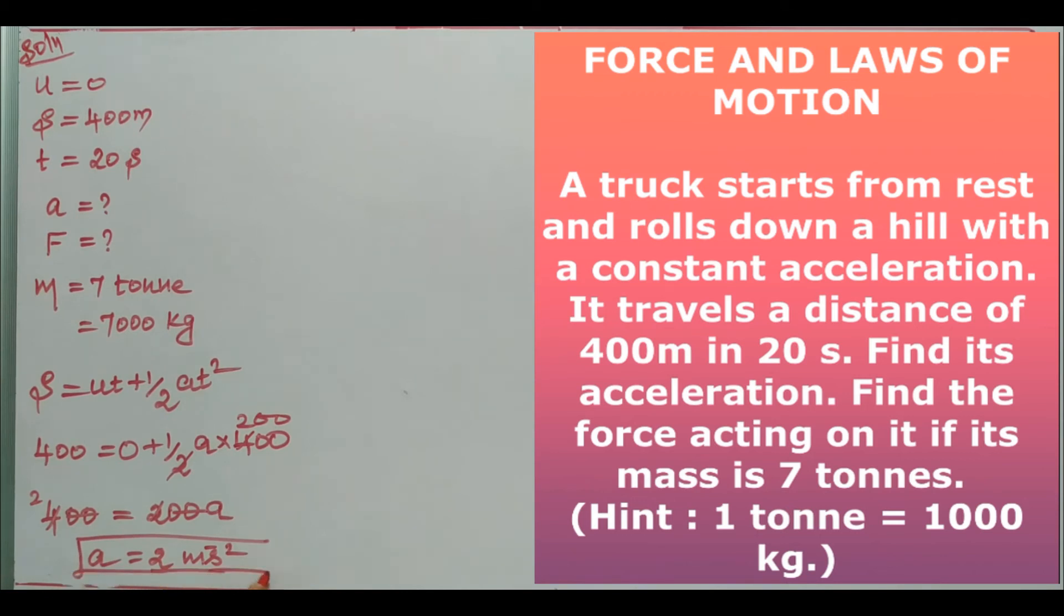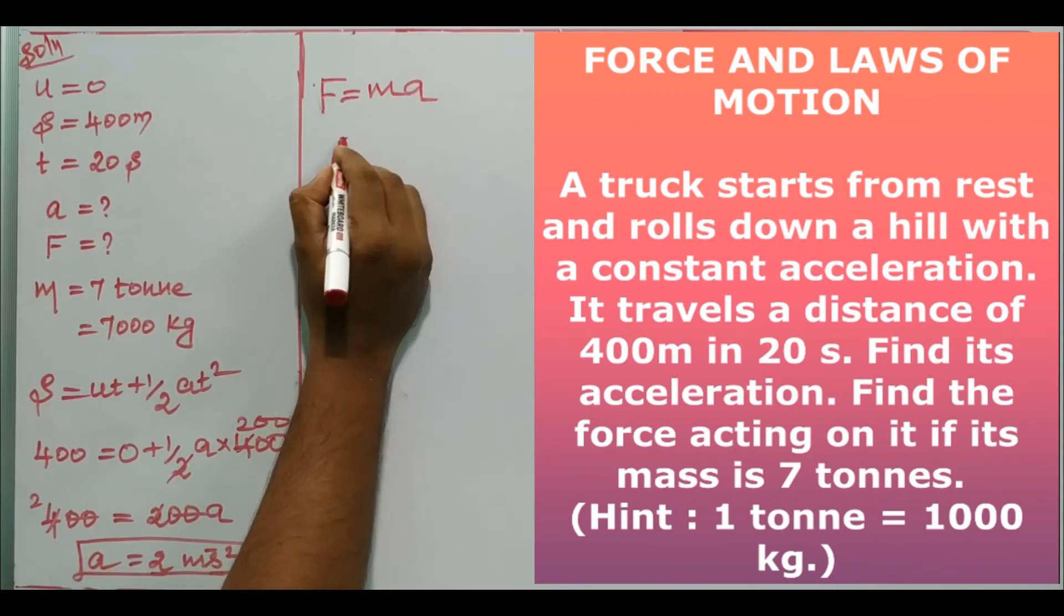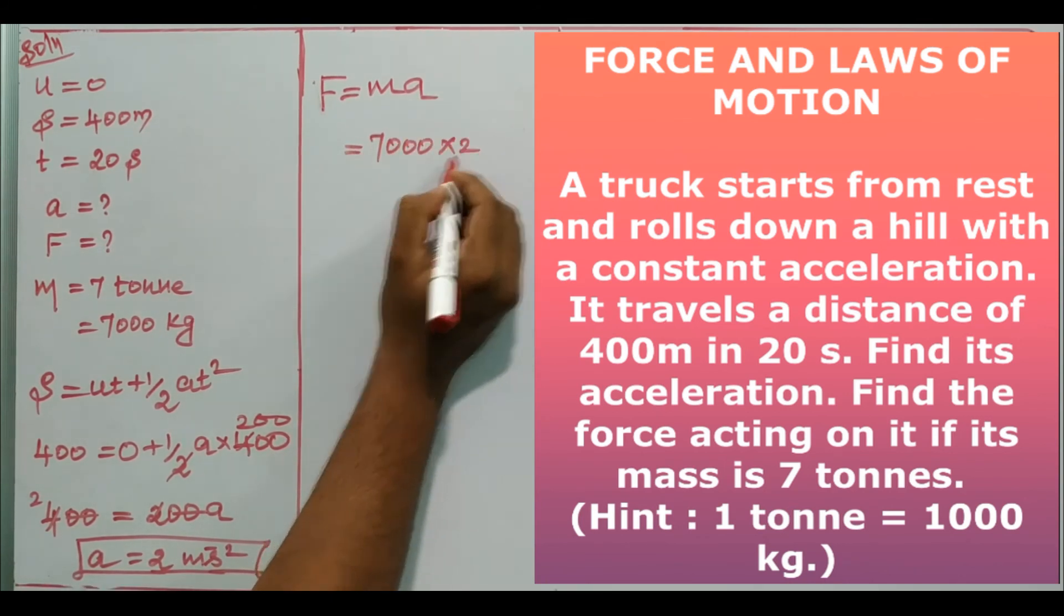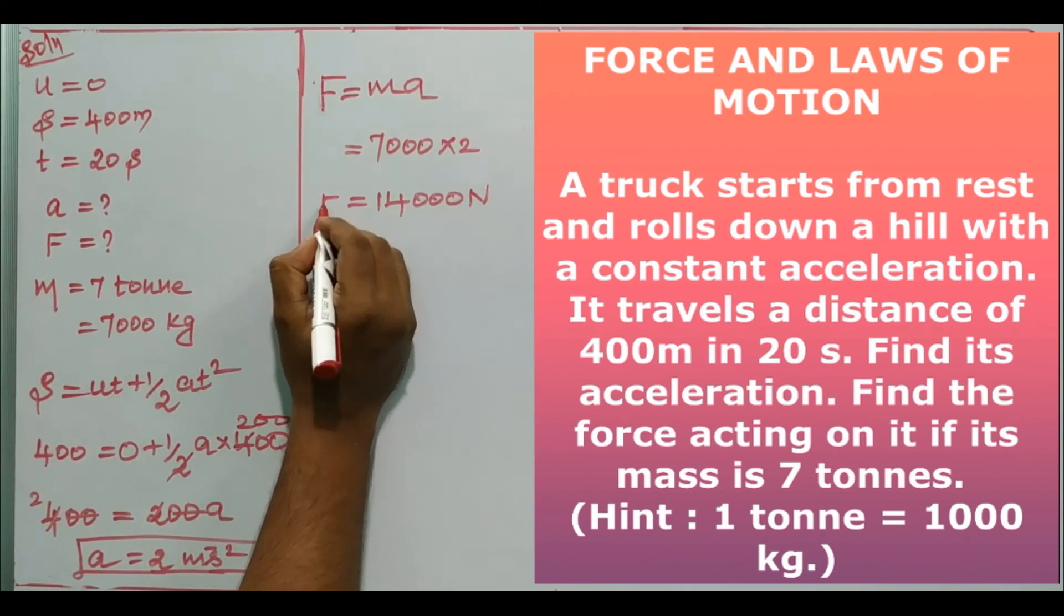Now we've got the acceleration, so it's easy to find the force. F equals ma. So m is 7000 kg and acceleration is 2, giving us 14000 newtons. That is the force.